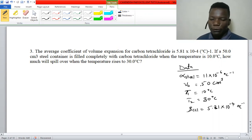The average coefficient of volume expansion for carbon tetrachloride is 5.81 × 10⁻⁴ per degree Celsius. If a 50 cubic centimeter steel container is filled completely with carbon tetrachloride when the temperature is 10°C, how much will spill over when the temperature rises to 30°C?